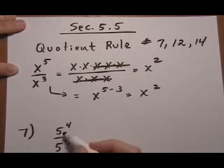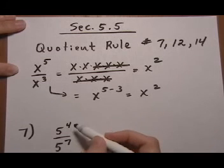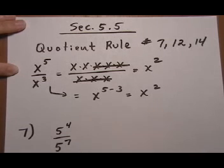So when you're dividing same bases, you can always subtract the exponents, and just keep in mind that you're always doing the top exponent subtract the bottom exponent.